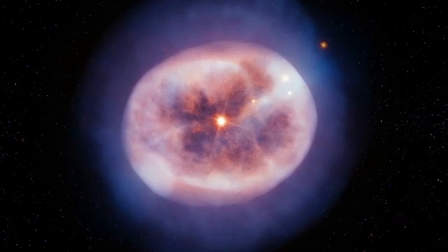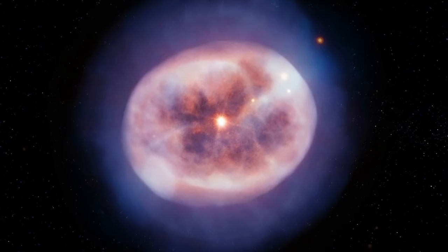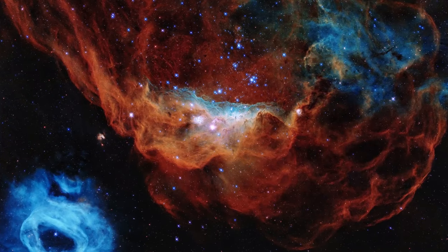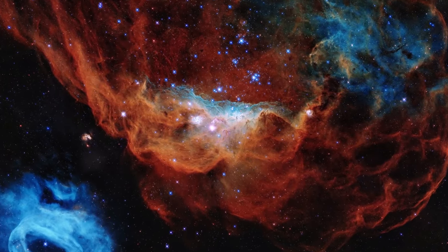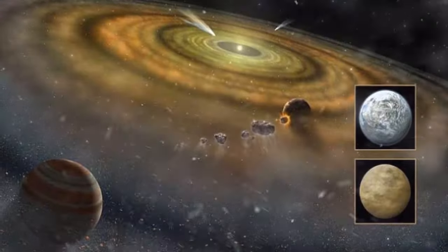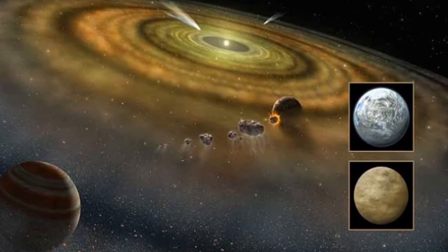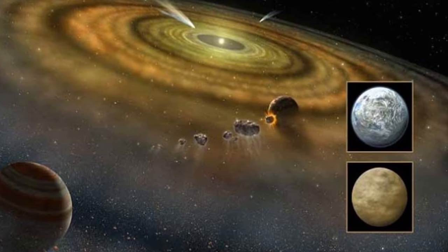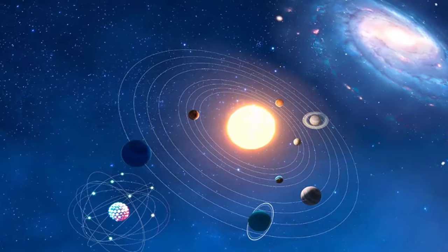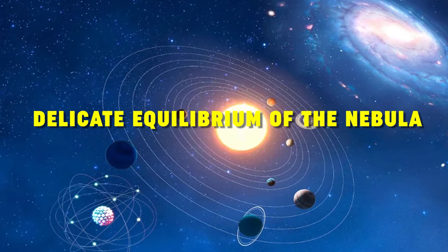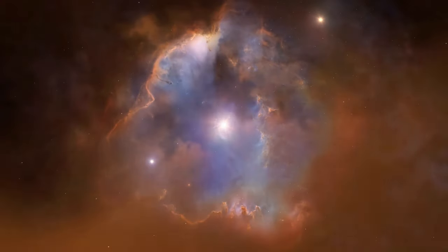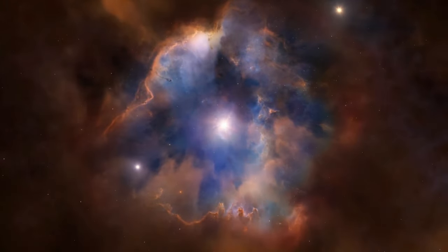Within this nebula, a series of events unfolded that would eventually give rise to the Sun and its orbiting family of planets, asteroids, and comets. The trigger for the solar system's formation was likely a shockwave from a nearby supernova or other cosmic event, which disturbed the delicate equilibrium of the nebula. As a result, the cloud began to collapse under its own gravity.